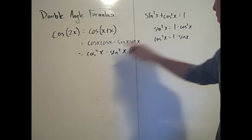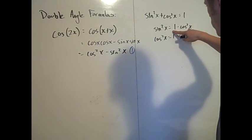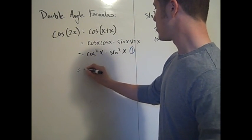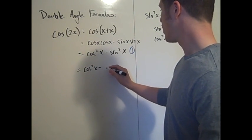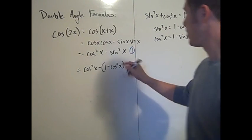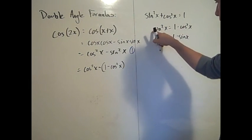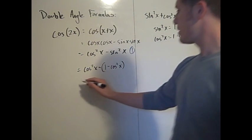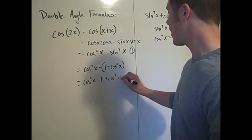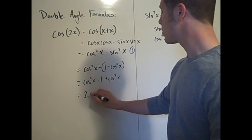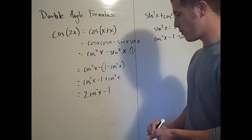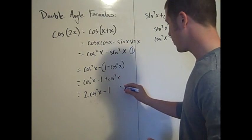We can plug in sine squared x equals 1 minus cosine squared x into the first form. So cosine 2x equals cosine squared x minus (1 minus cosine squared x), which simplifies to cosine squared x minus 1 plus cosine squared x, giving us 2 cosine squared x minus 1. That's the second form you want to know.